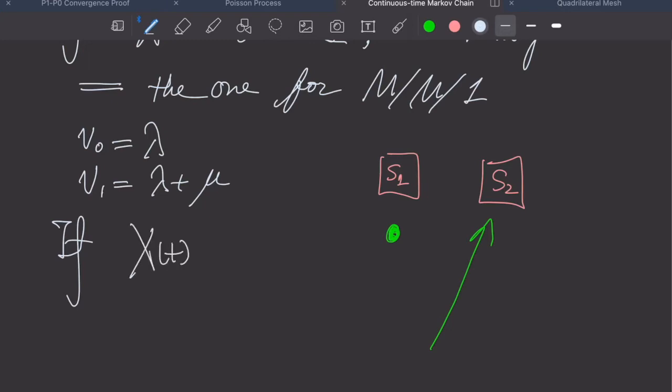The multi-server only, the difference, when there are two or more customers in the system. When X(t) is i greater than 2, if a new customer comes into the line, he has to wait.